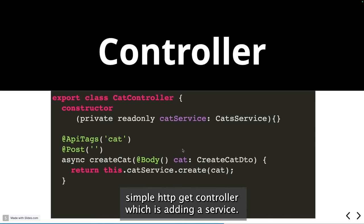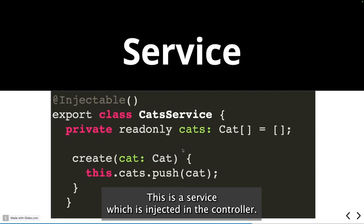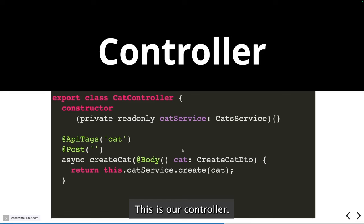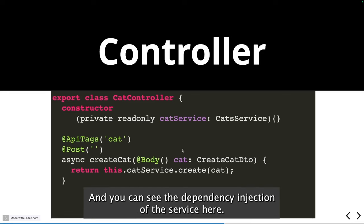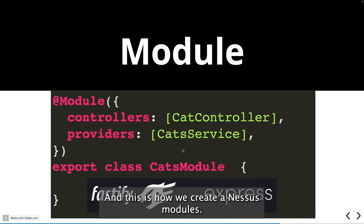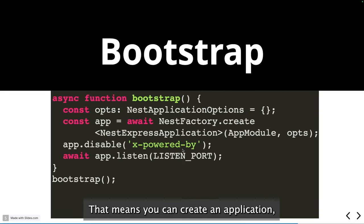Looking at a code example, here is a simple CatsController which injects a service. This is the controller, and you can see the dependency injection of the CatService here. This is also how we create NestJS modules.